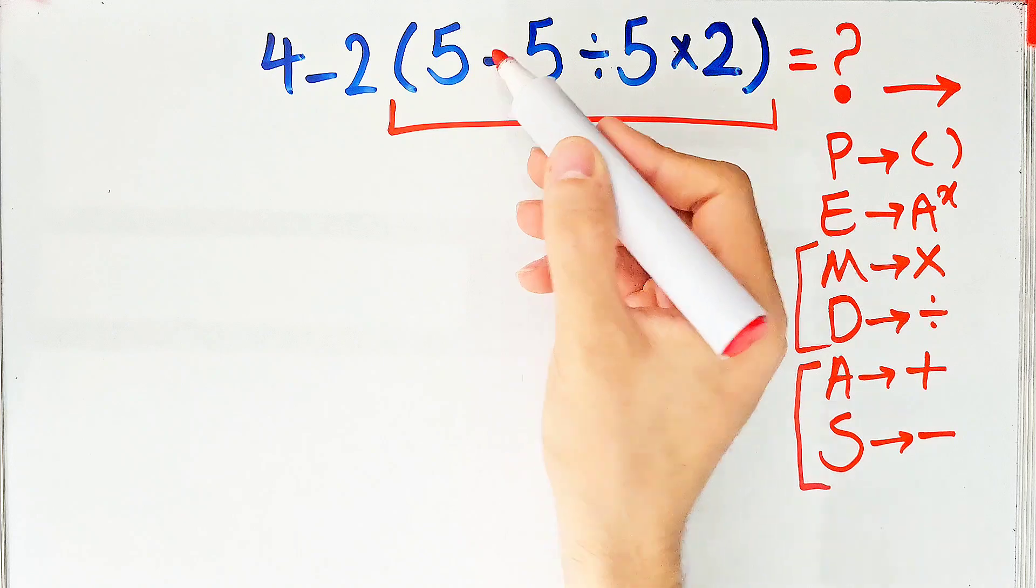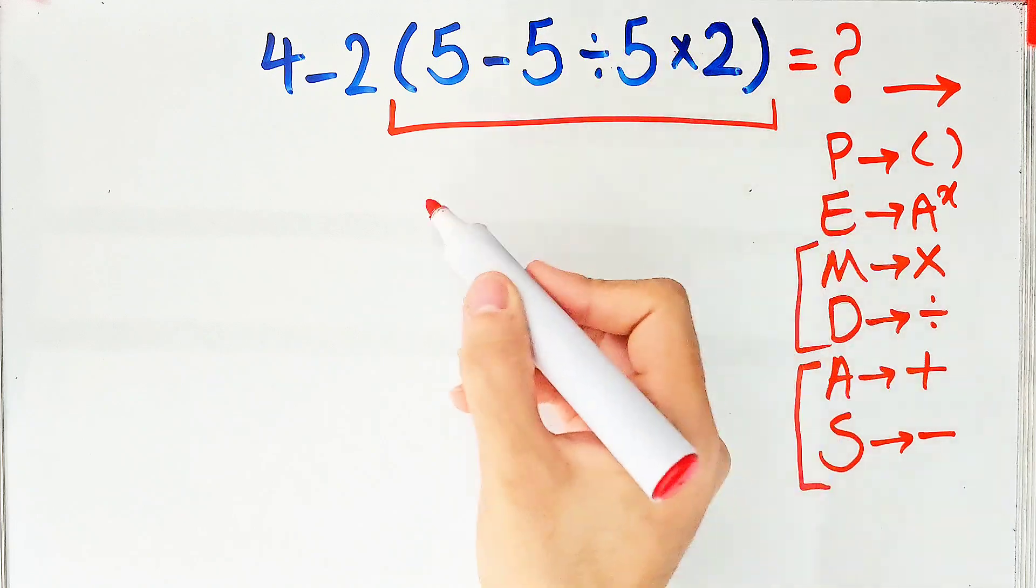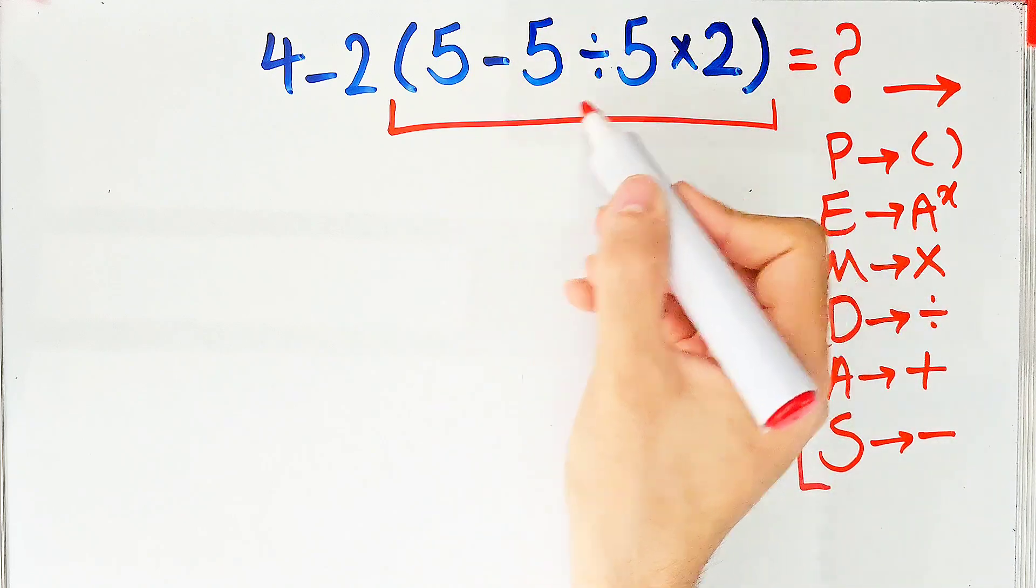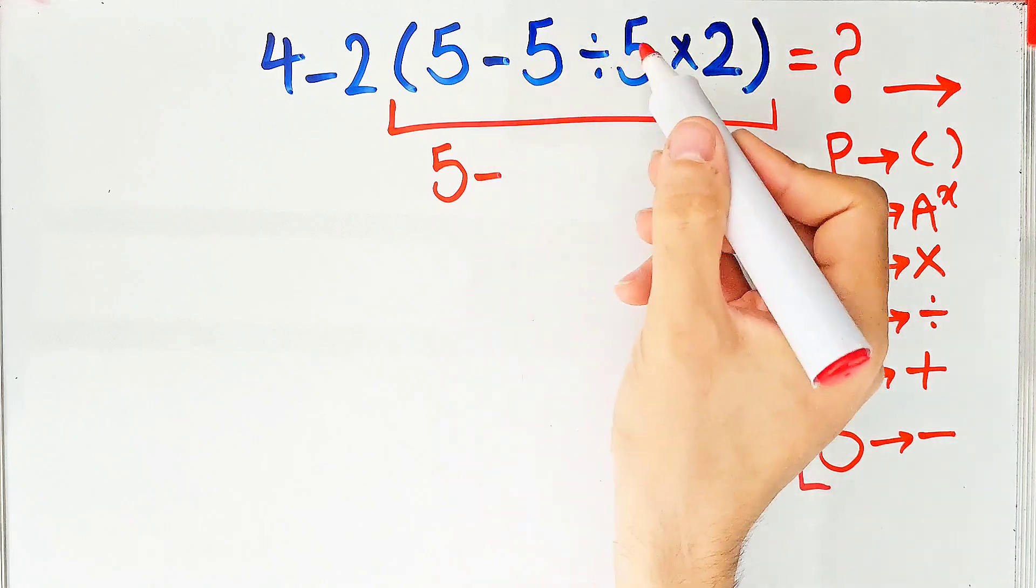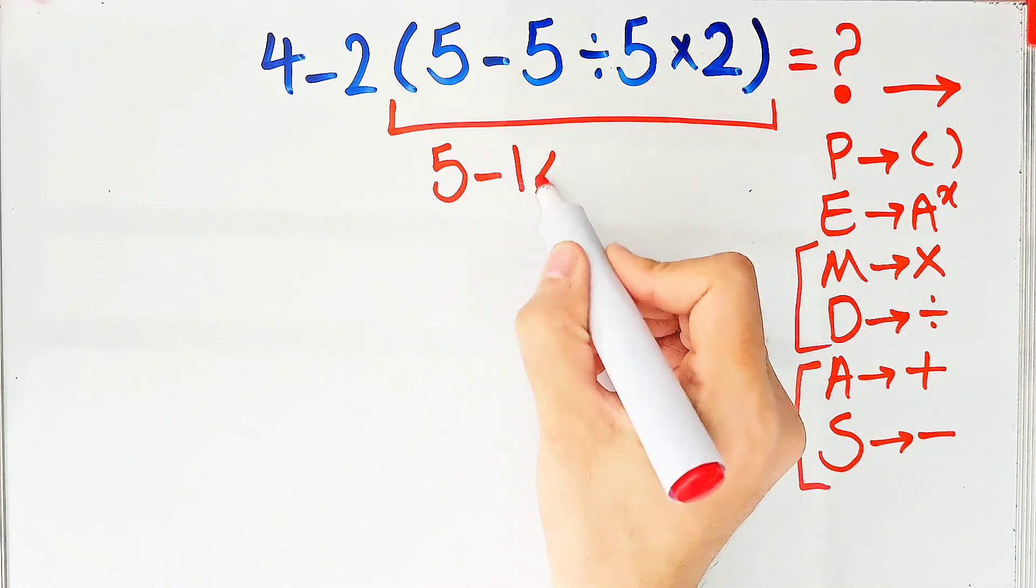First we simplify this division: 5 minus 5 divided by 5, which equals 1, then times 2.